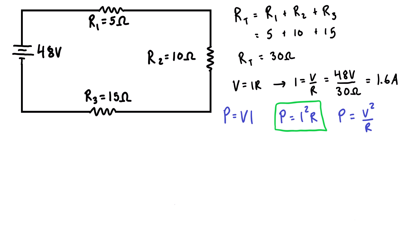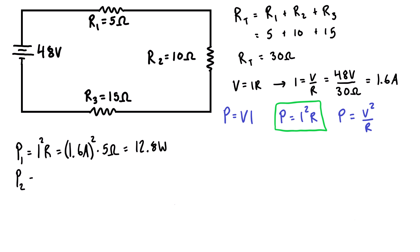For the first resistor, we calculate P1 equals I²R: the current is 1.6 amps squared times the resistance of 5 ohms. 1.6 squared times 5 gives us 12.8 watts — that's the power consumed by the first resistor.